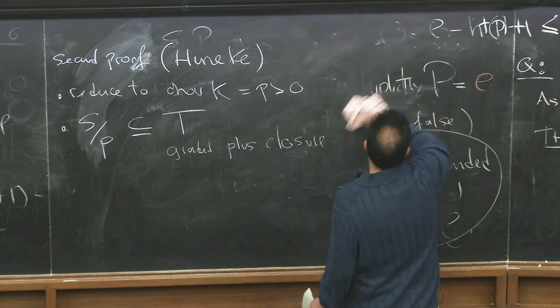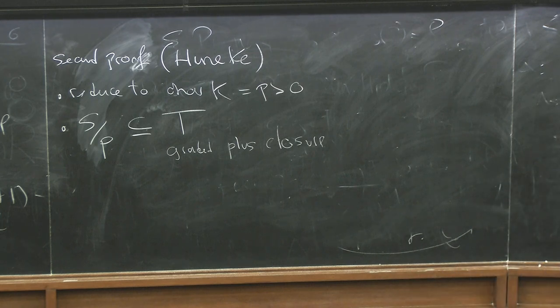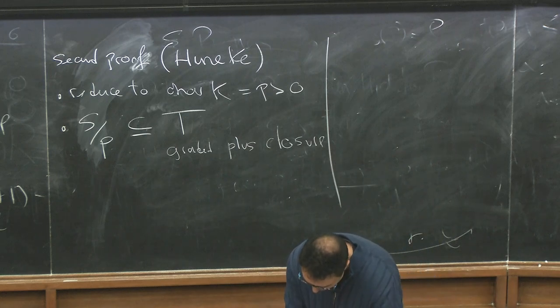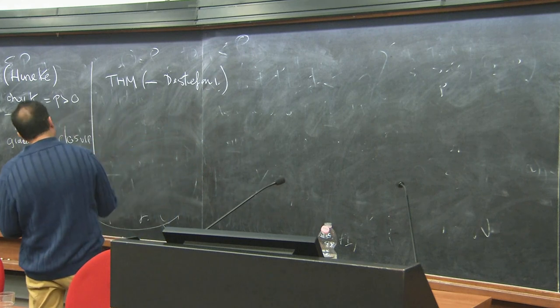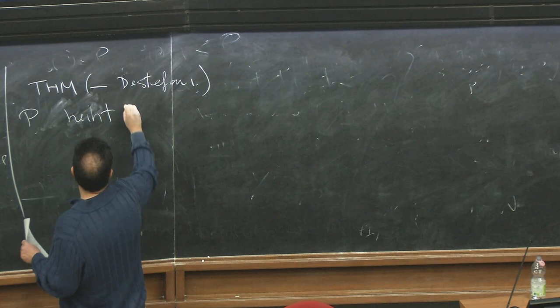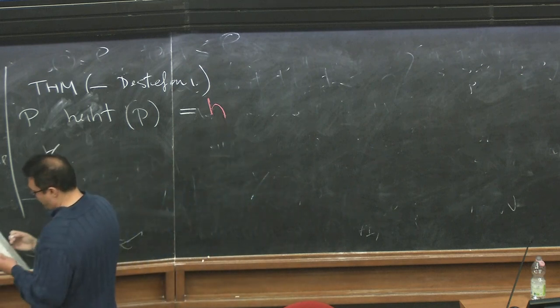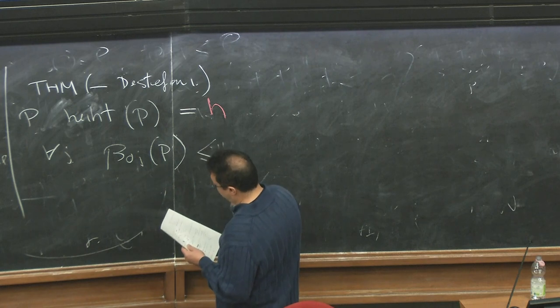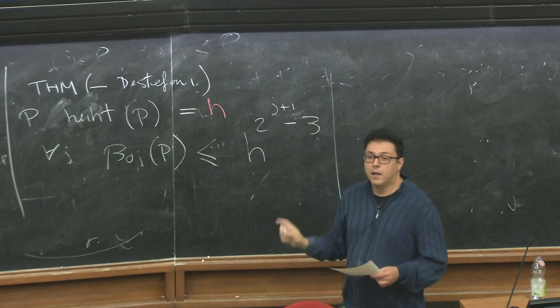So what we did with Alessandro is basically we found a different route. We found a different method to prove results of this type. Our theorem is the following: you start with a prime P of height h, and that's our data. Then for every j, the number of generators in degree j of this prime are bounded above by a double exponential: h to the 2 to the j plus 1 minus 3.